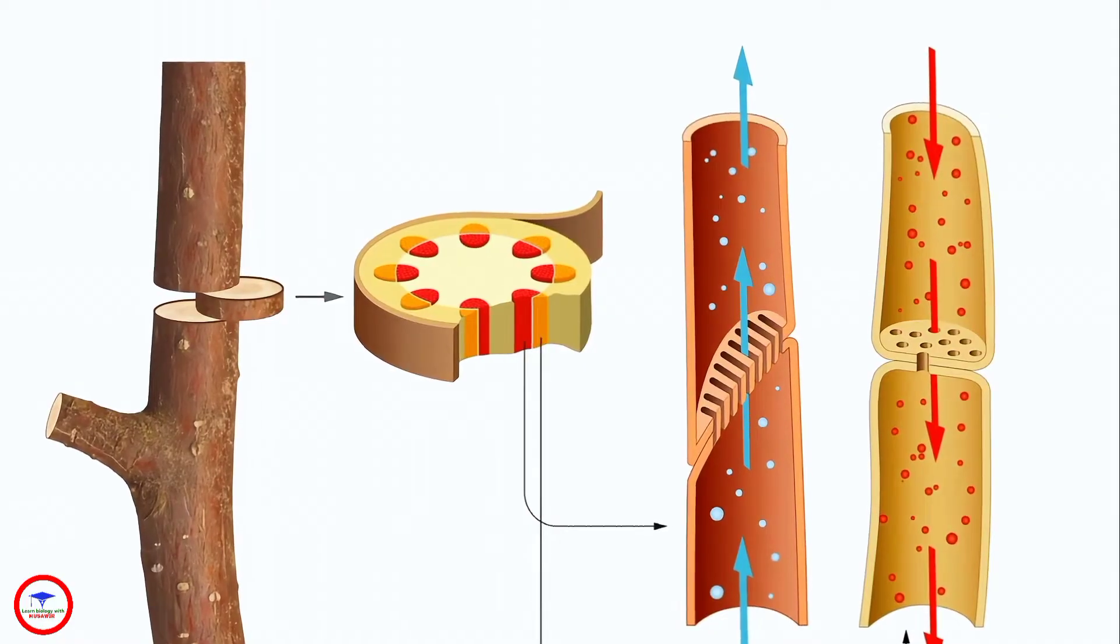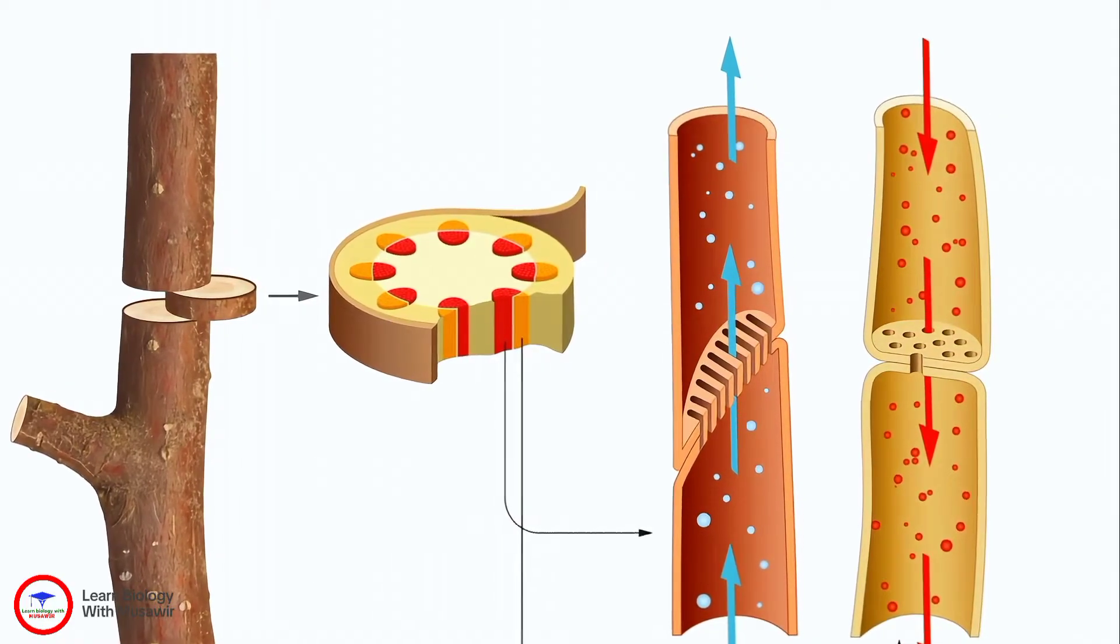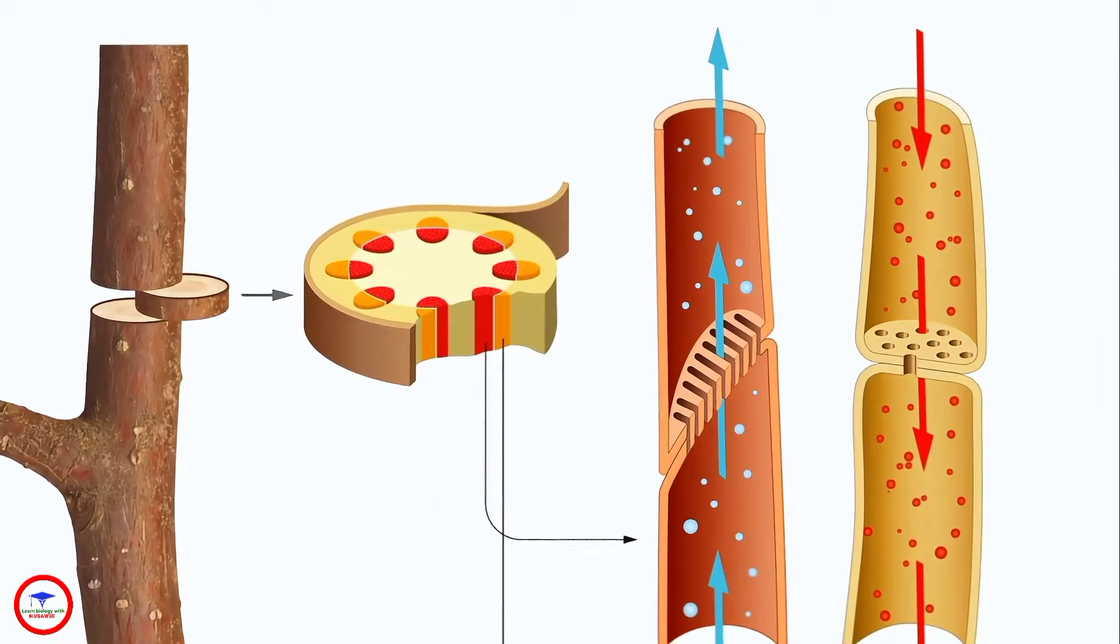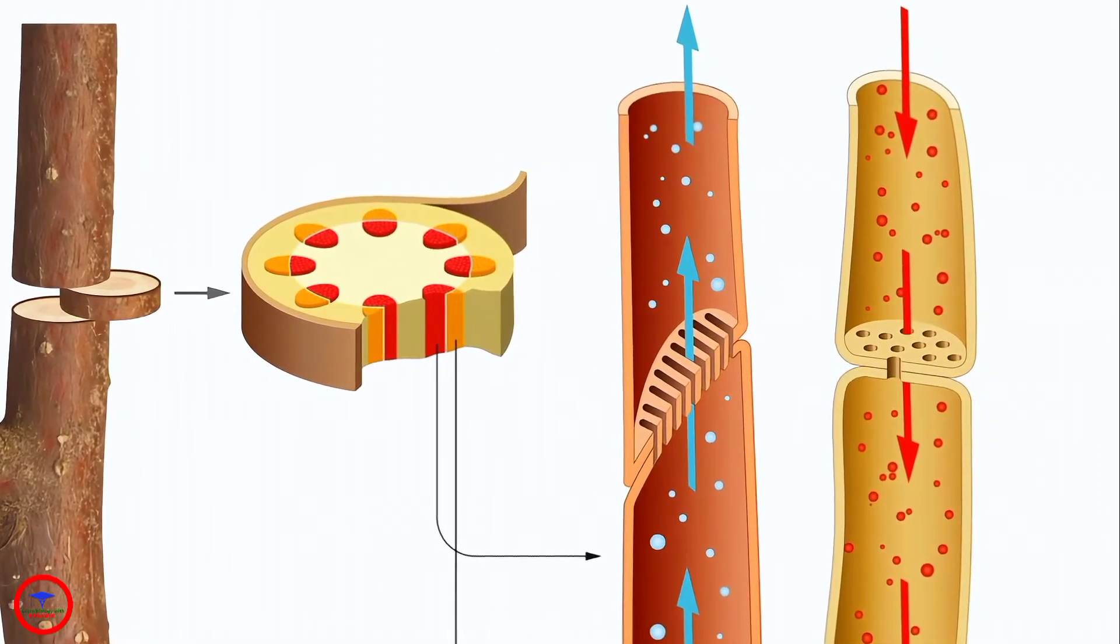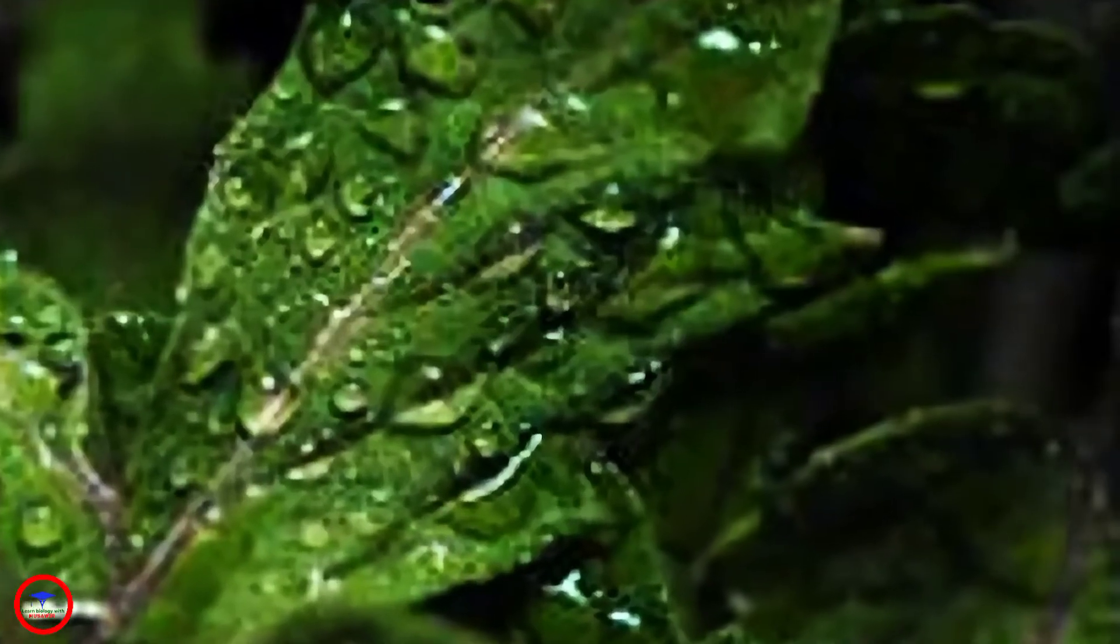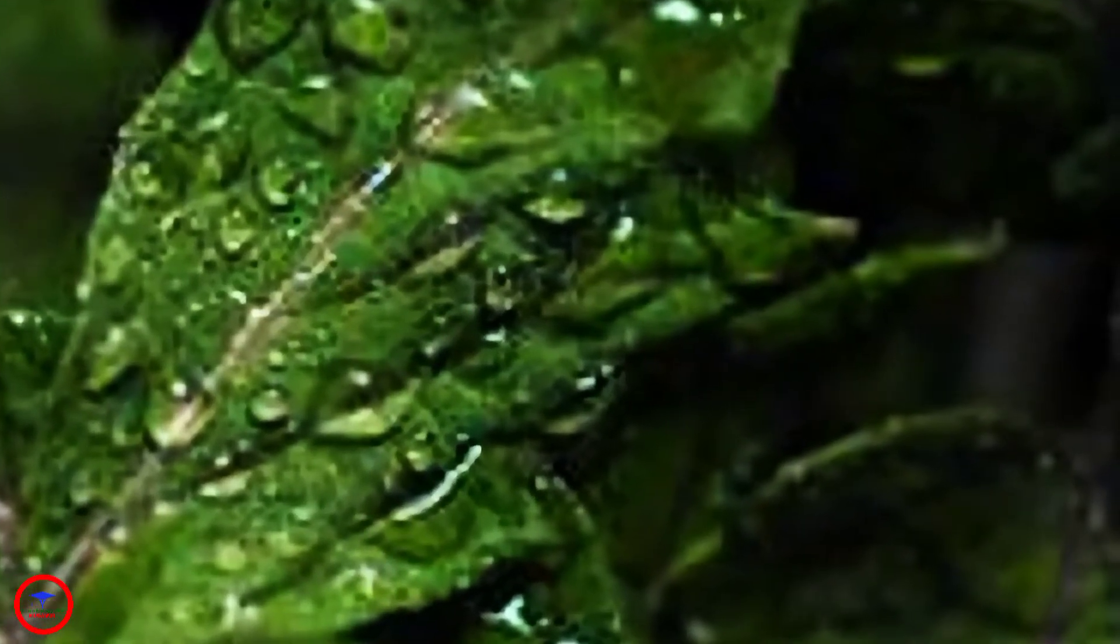Thus, plants need a system to distribute water and mineral nutrients which are absorbed by the roots, as well as the sugars which they produce through photosynthesis, to all their parts. This system also helps in the removal of waste materials.